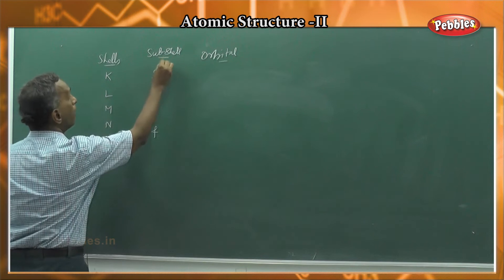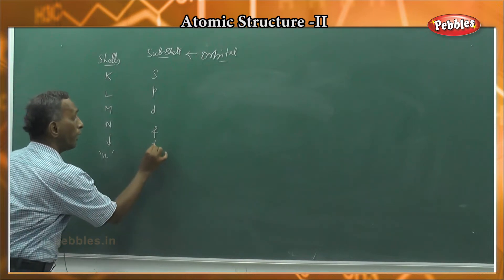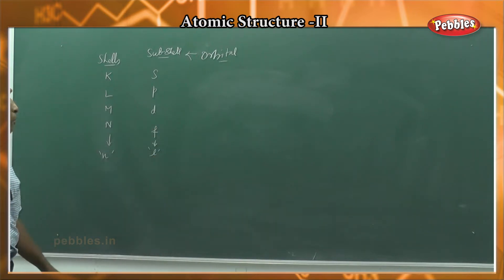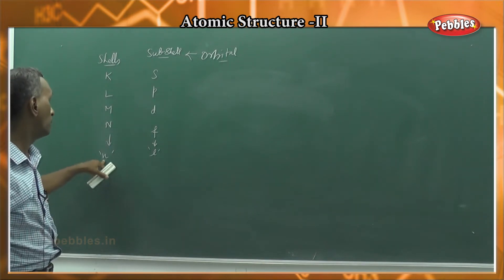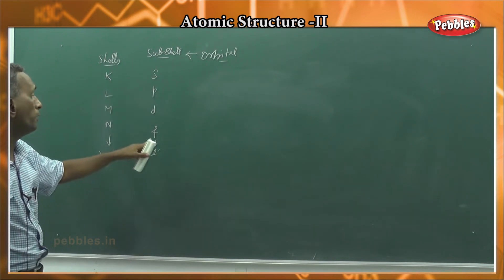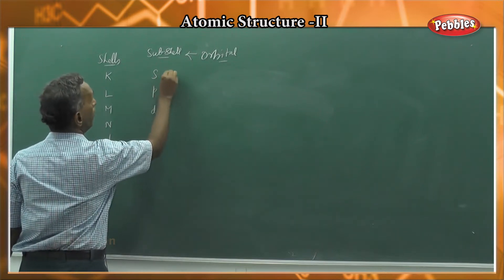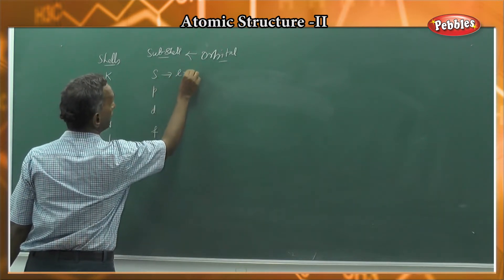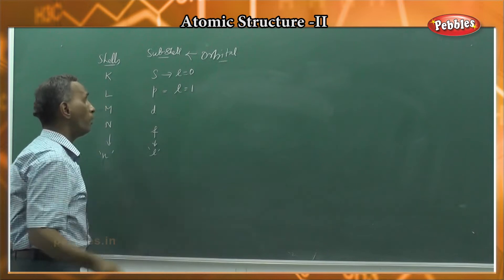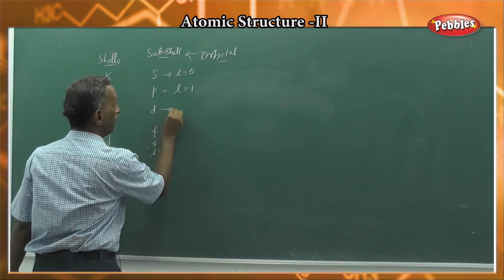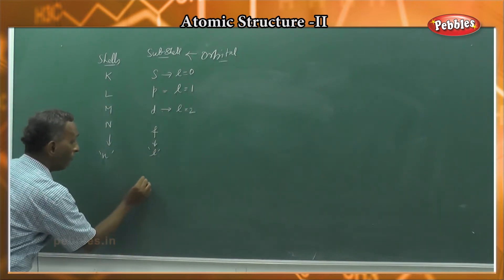Orbitals or sub-shells are denoted as small letters. The azimuthal quantum number, denoted as L, gives orbital information. Principal quantum number gives shell information; azimuthal quantum number gives orbital information. L equal to 0 represents S orbital, L equal to 1 represents P orbital, and L equal to 2 represents D orbital.